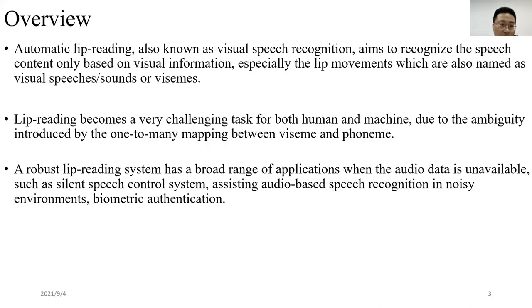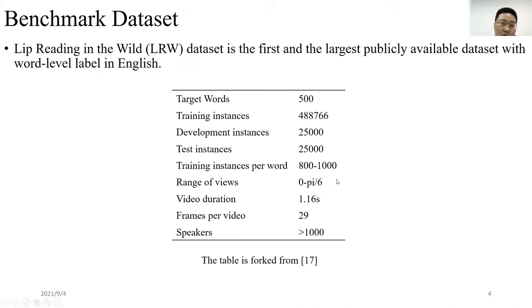Automatic lip reading, also known as visual speech recognition, aims to recognize the speech context only based on visual information, especially the lip movements, which are also named as visual speeches or visemes. Lip reading becomes a very challenging task for both human and machine. Due to the ambiguity introduced by the one-to-many mapping between visemes and phonemes, a robust lip reading system has a broad range of applications when the audio data is unavailable, such as silent speech control system, assisting audio-based speech recognition in noisy environments, and biometric authentication.